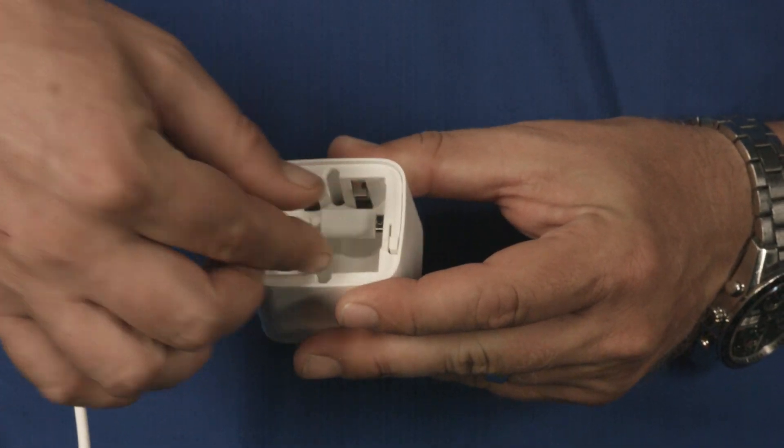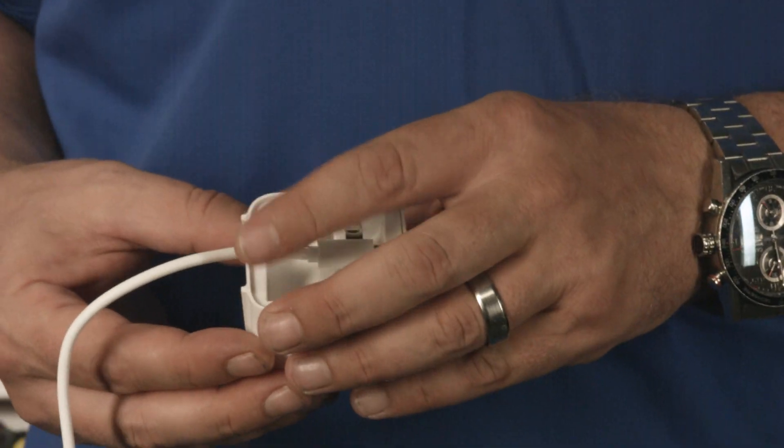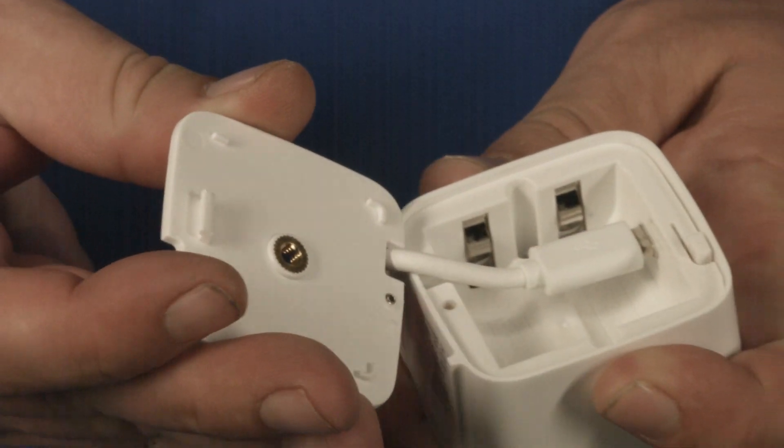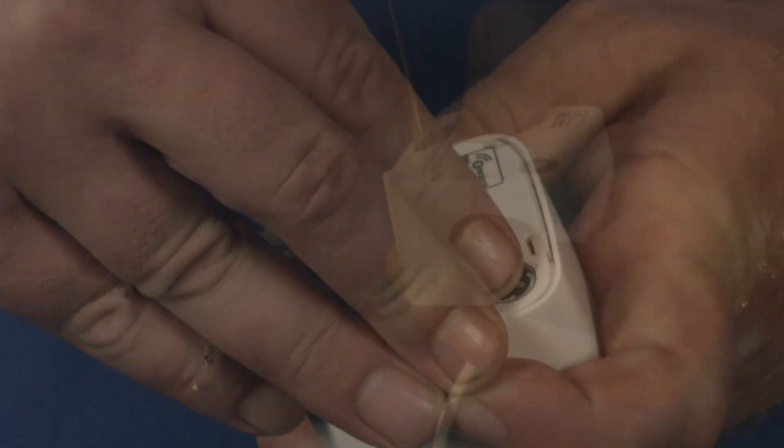Carefully insert your micro USB cable into the port and position it through the opening of the battery door. Replace the battery door and secure the screw.